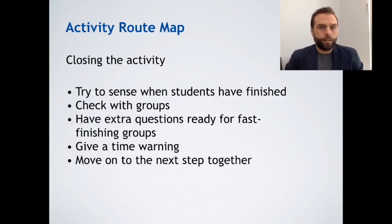Now you need to think about closing the activity. Try to sense when students are finished. Try to get a kind of feeling for the class. You might have some kind of open discussion, but try and sense when students are running out of things to say. You can walk around and check with different groups. You can just quickly walk to a group and say, have you finished? You can have extra questions ready for fast finishing groups. If you have a main activity that some groups have finished quickly, it's a nice idea to have like a little extra discussion question just for those students to keep talking while you're waiting for other groups to finish. You can give a time warning, so you can tell students, one more minute. Just let them know that things are coming to a close. And it is important that you move on to the next step together. Try to get everybody finished, get the attention back, and then you can introduce the next steps or tell about the next part of the lesson.